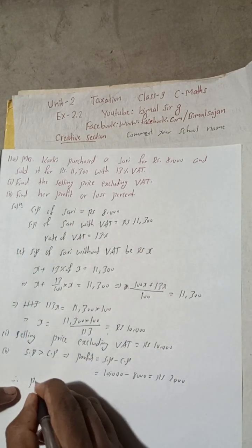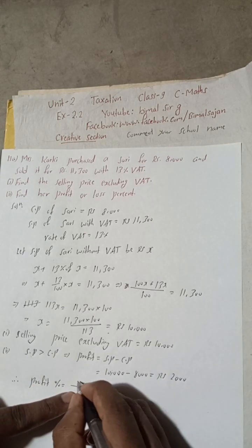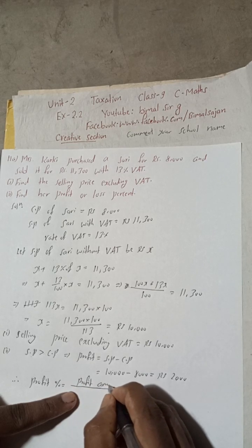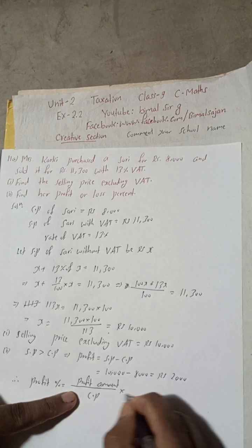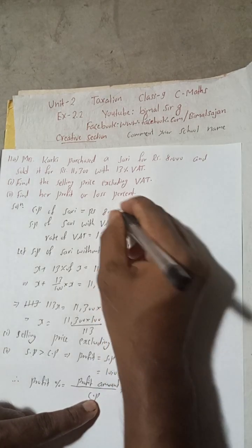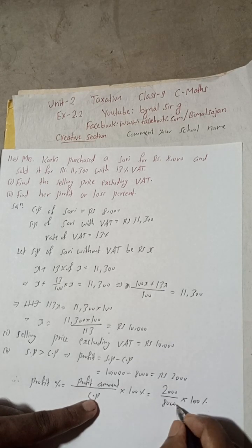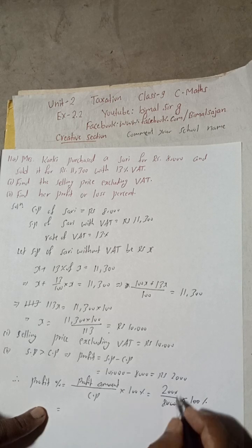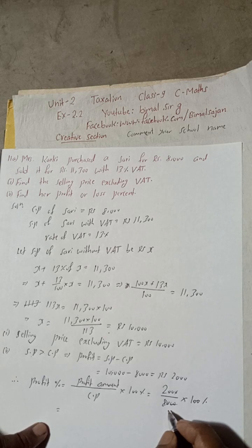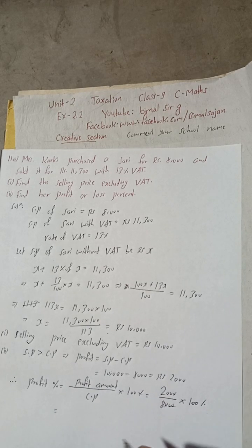So profit percent. Therefore, profit percent is equal to profit amount by CP into 100 percent. So profit amount is 2,000 divided by CP is 8,000 into 100 percent. So canceling zeros, 200 divided by 8 will be 25 percent.